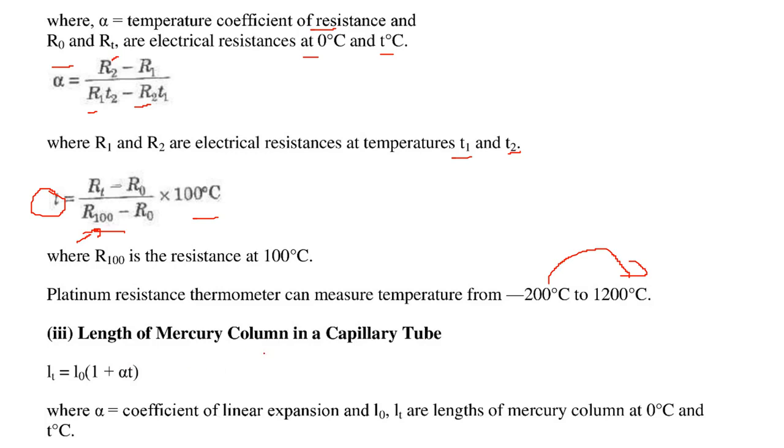Then the length of mercury column in a capillary tube, this is given by LT equal to L0, 1 plus alpha T. Here the alpha is the coefficient of linear expansion, this L0 or L sub 0 and L sub T, these are the length of mercury column at 0 degree and T degree centigrade.